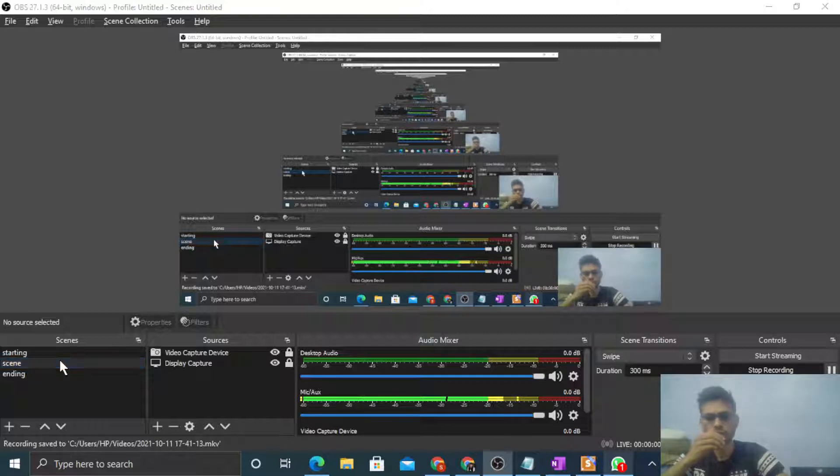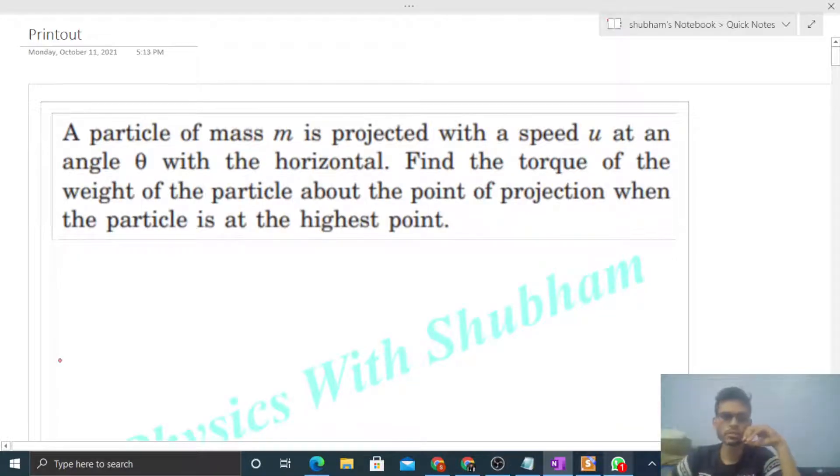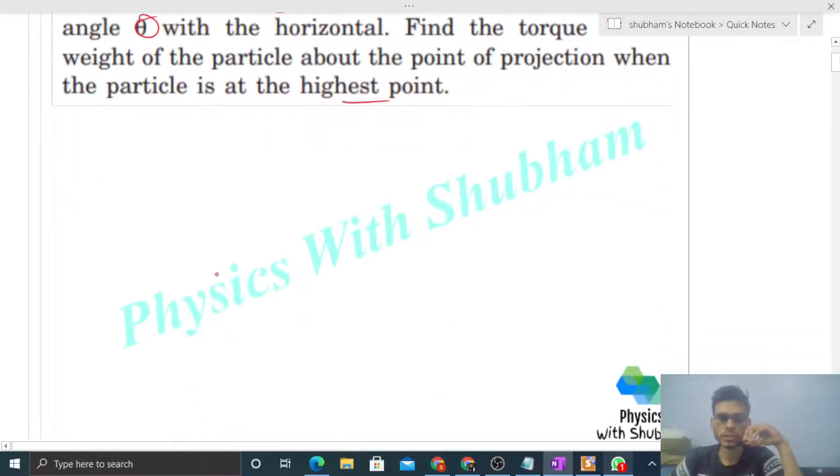Hi everyone, today let's discuss this interesting problem. A particle of mass m is projected with speed u at an angle θ with the horizontal. Find the torque of the weight of the particle about the point of projection when the particle is at the highest point.